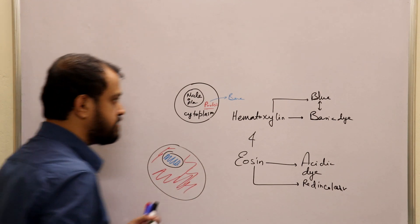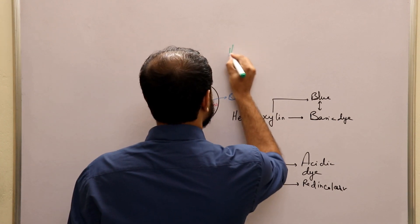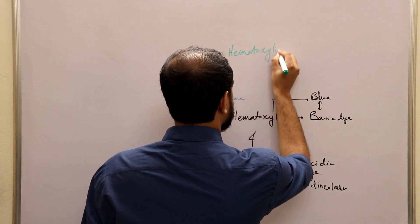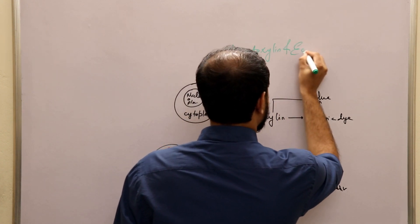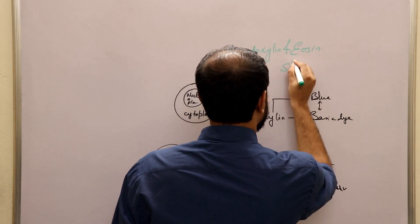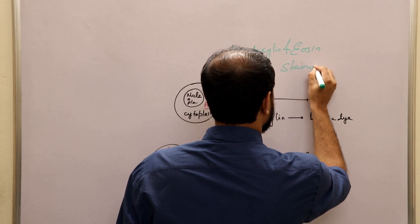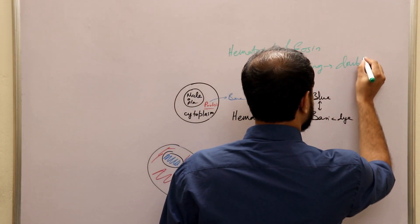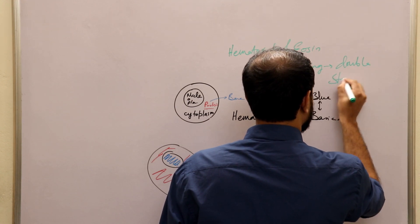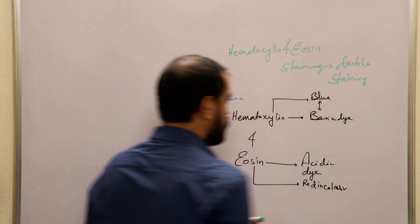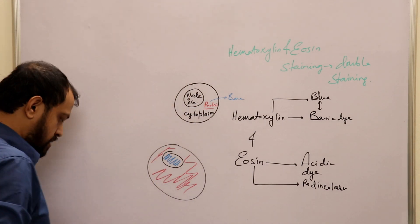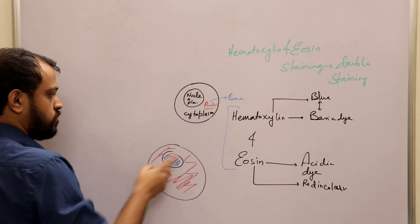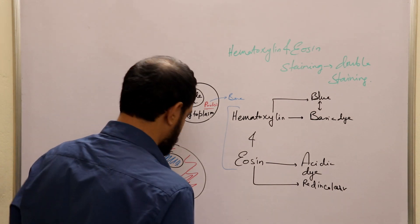Therefore, hematoxylin and eosin staining is called double staining. Using one simple stain — hematoxylin and eosin — we are staining both compartments: the cytoplasm (red) and the nucleus (blue).